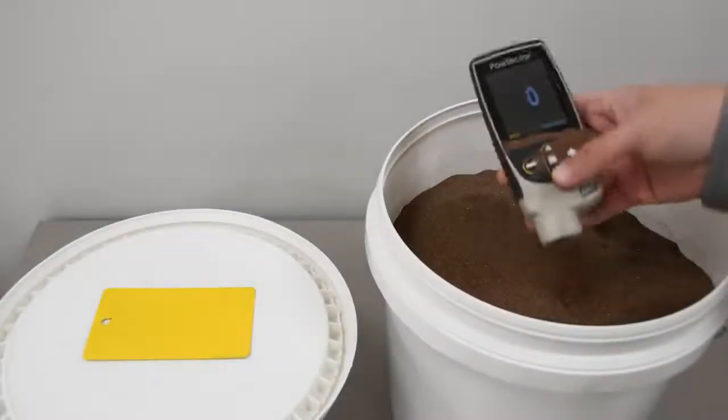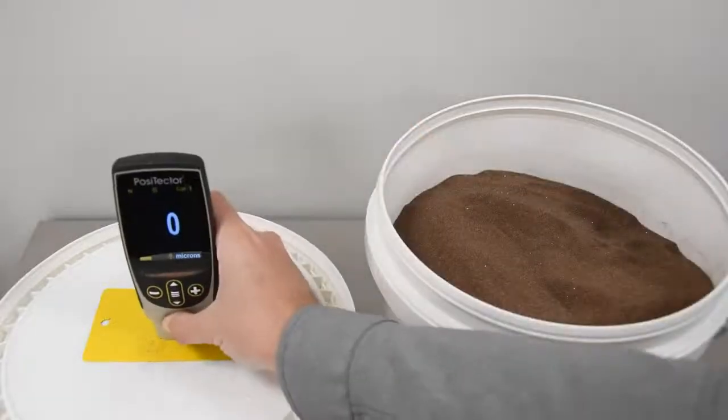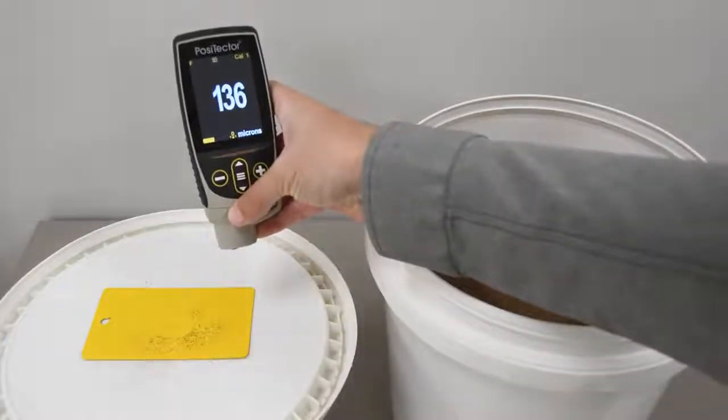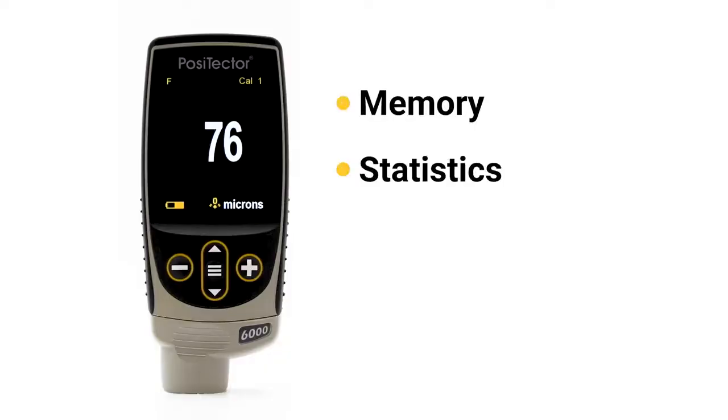The PosiTector 6000 is ruggedized for industrial use and includes advanced functionality like memory, statistics, scanning, and powerful reporting software.